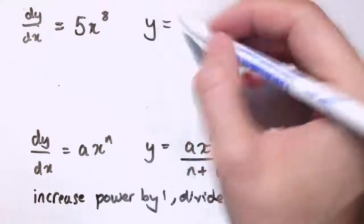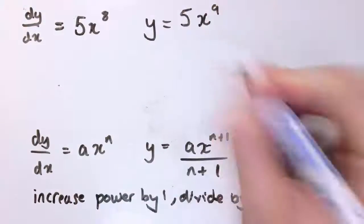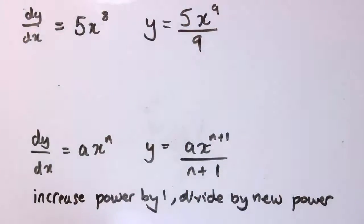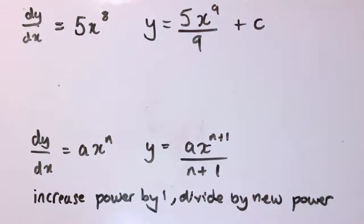So, y here would be 5x⁸, and so we add 1 to the 8, and we get x⁹, and I've got the 5 there, and then I divide by the new power, so it's 5x⁹ over 9. And, of course, remember from what we were saying at the start, I didn't do it in the last example, but we do also need to add on the +c here, so we get +c.